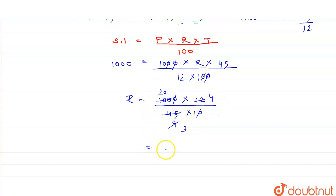That is equals to 80 divided by 3. Rate of interest kitna a gaya, that is equals to 80 divided by 3 percent.